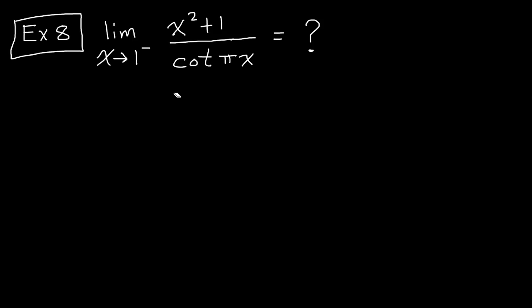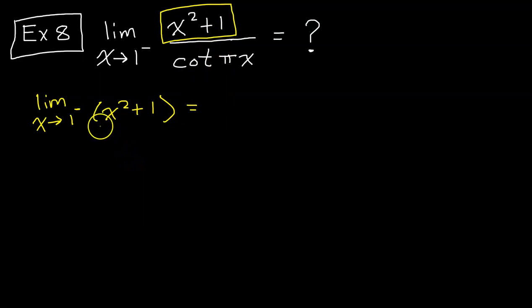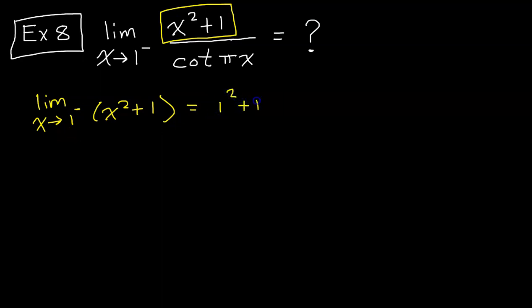Example 8: find the limit as x approaches 1 from the left of (x² + 1) / cot(πx). Let's start with the numerator. We can evaluate the limit of a polynomial by direct substitution. If we let x equal 1, that's 1² + 1, which is 1 + 1, which equals 2.